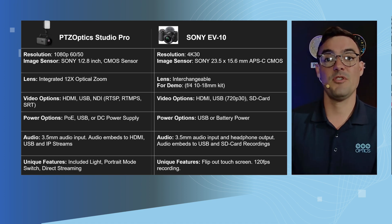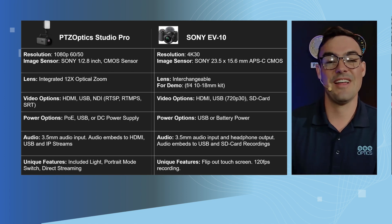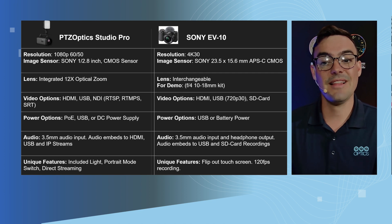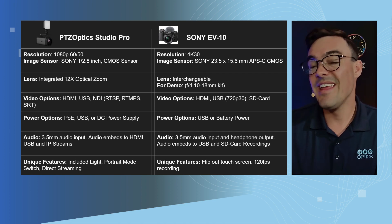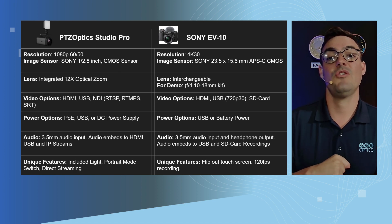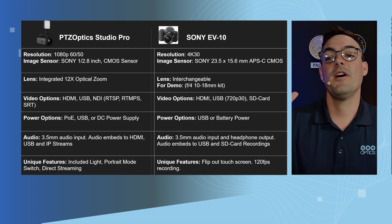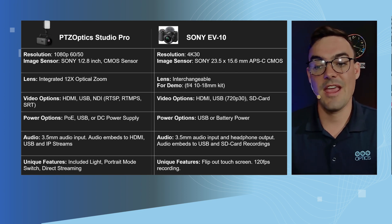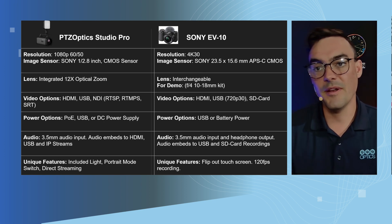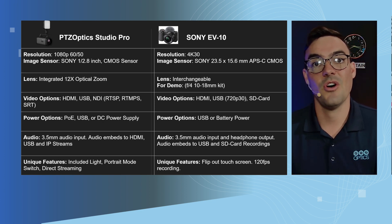From a lens perspective, the PTZOptics Studio Pro has a 12x optical zoom — an integrated optical zoom, so you don't have to purchase a separate lens. With the Sony EV10, you have an interchangeable lens, which is very flexible — good if you need to do vlogging or photography and need to switch lenses. The demo we showed used an F8 10 to 18 millimeter lens with the camera, so it has a little bit of zoom capability, but not quite as much as the integrated 12x lens on the Studio Pro.